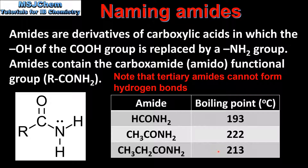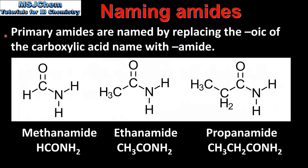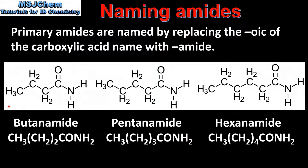Next we'll look at how to name primary, secondary and tertiary amides. Primary amides are named by replacing the OH of the carboxylic acid name with amide. A one carbon carboxylic acid would be named methanoic acid, so we replace the OH with amide, giving methanamide. With 2 carbon atoms we have ethanamide, and with 3 carbon atoms we have propanamide. With 4, 5 and 6 carbon atoms in the longest chain, the names are butanamide, pentanamide and hexanamide respectively.